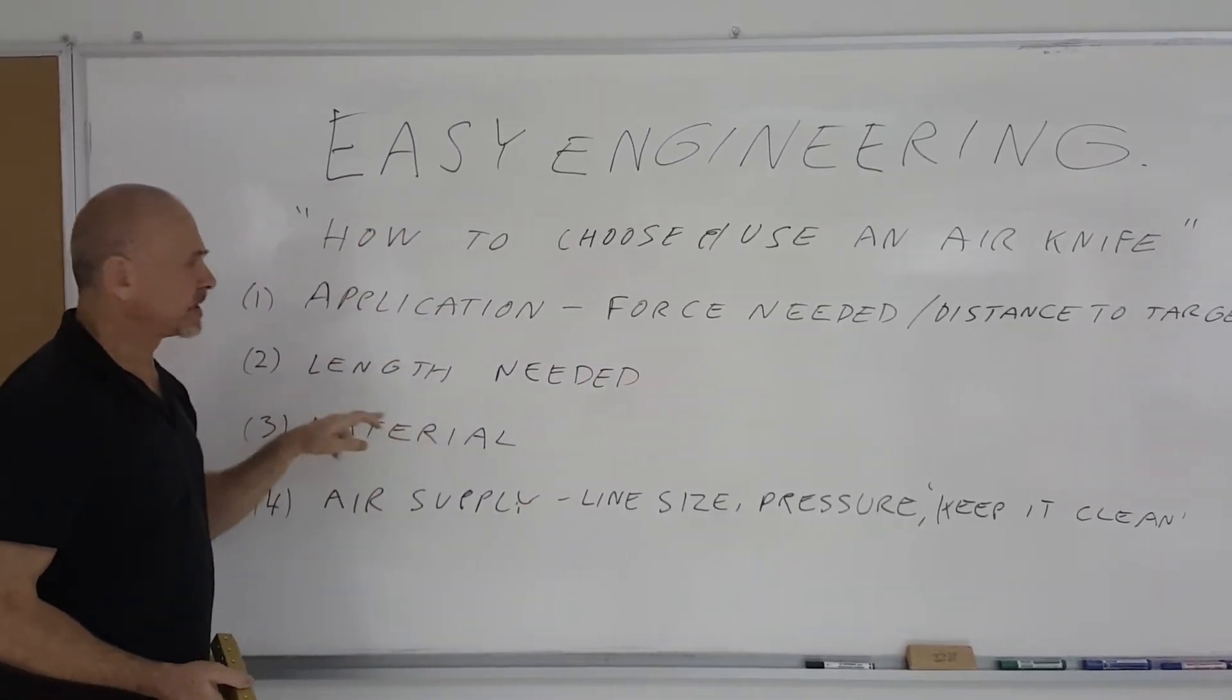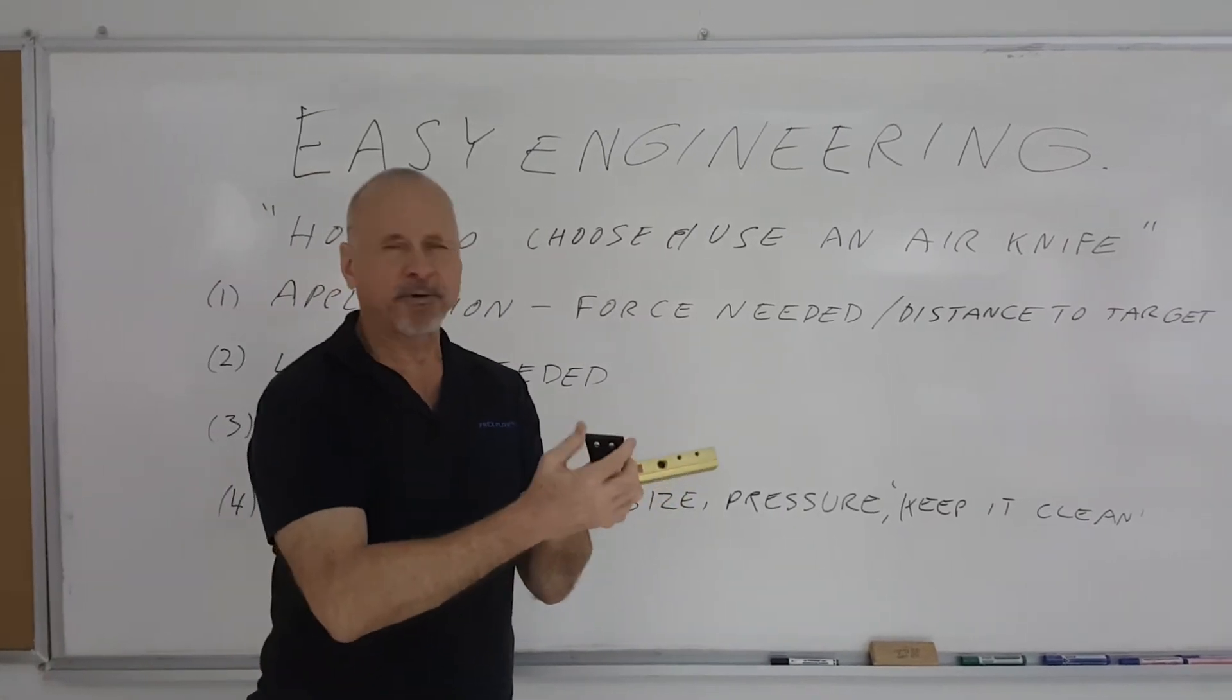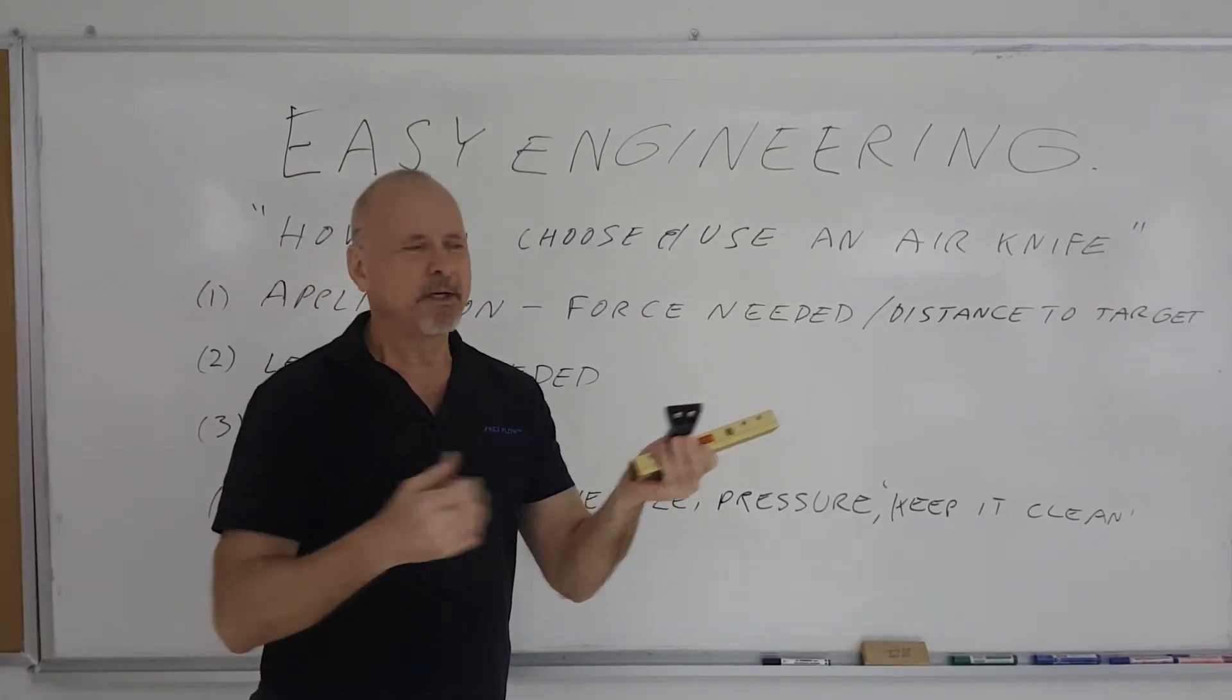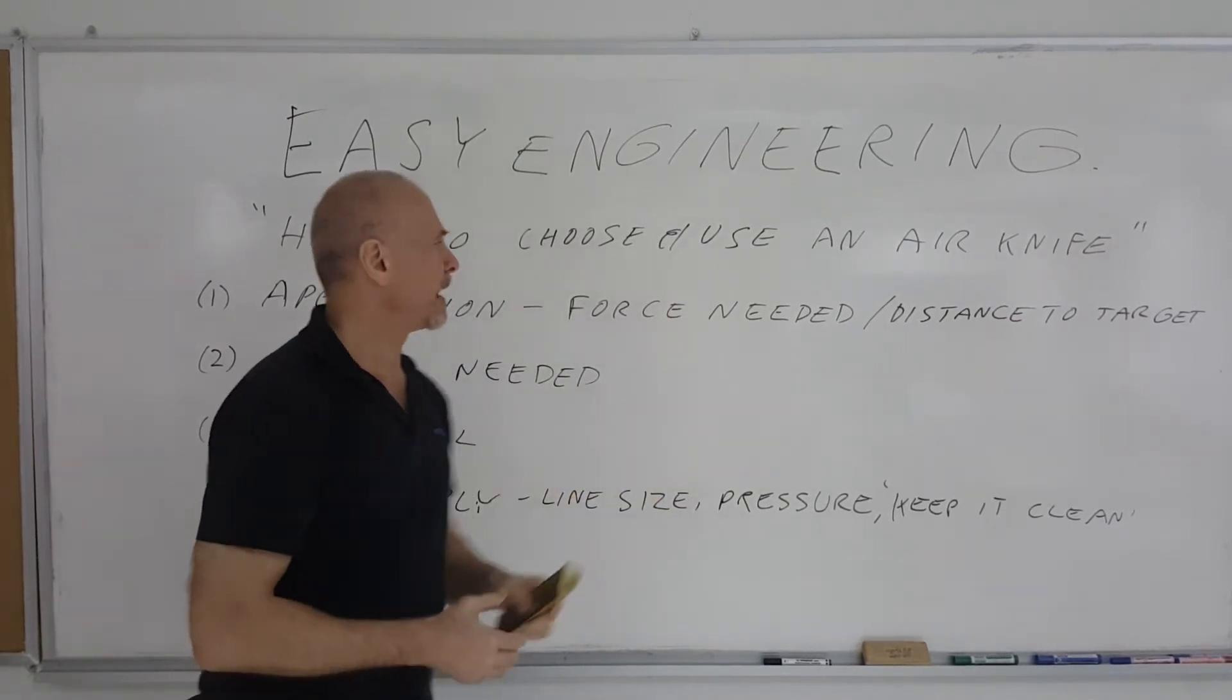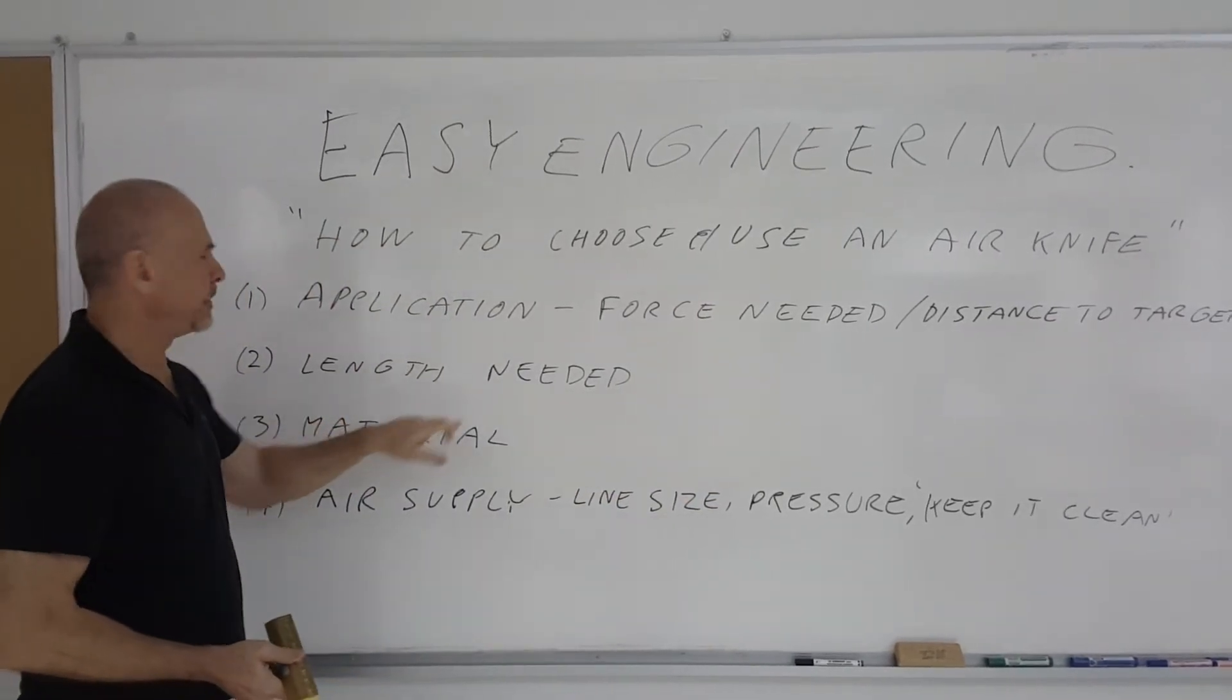The second thing you want to consider is the length. So how many of these separate flat jets on the manifold do you need or what continuous length do you need of a single piece air knife. So the length you need to choose.